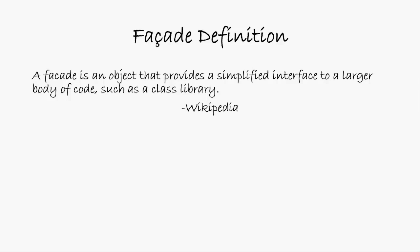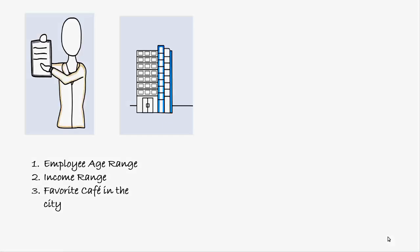The facade design pattern uses a facade object. Let's take a look at this with the help of an example. On the left hand side we have a person who wants to conduct a survey in an office building shown on the right hand side. The surveyor wants to collect three pieces of information from each employee in that building: the employee's age range, income range, and name of their favorite cafe in the city.